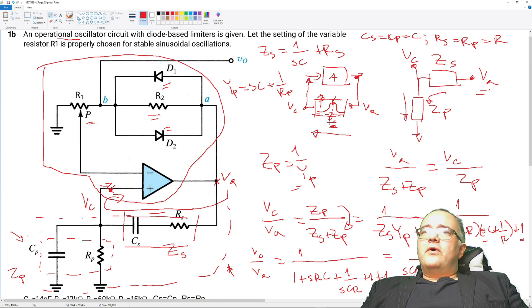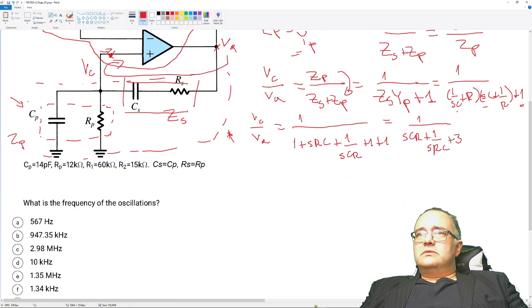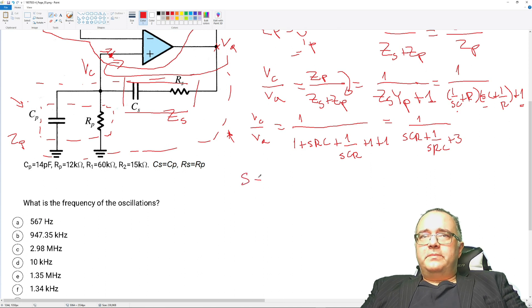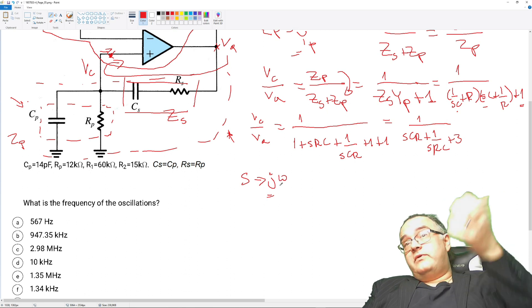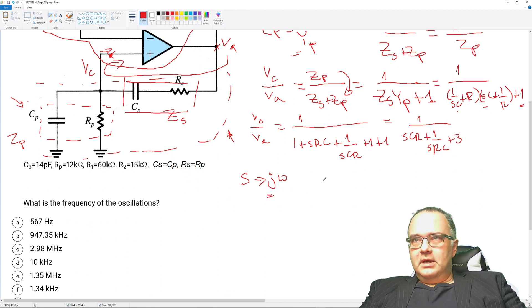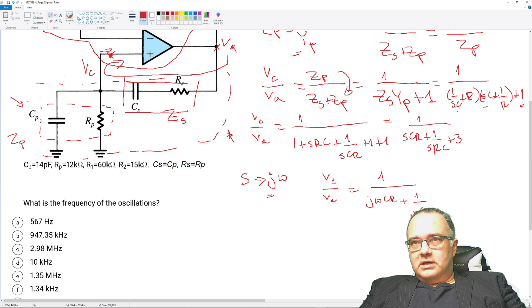Now for sinusoidal signals we should substitute the operand S with jω where this is the imaginary unit and this is the frequency which will eventually derive as frequency of oscillation. But then rewritten the transfer of the bandpass filter will be 1 over jωCR plus 1 divided by jωCR plus 3.